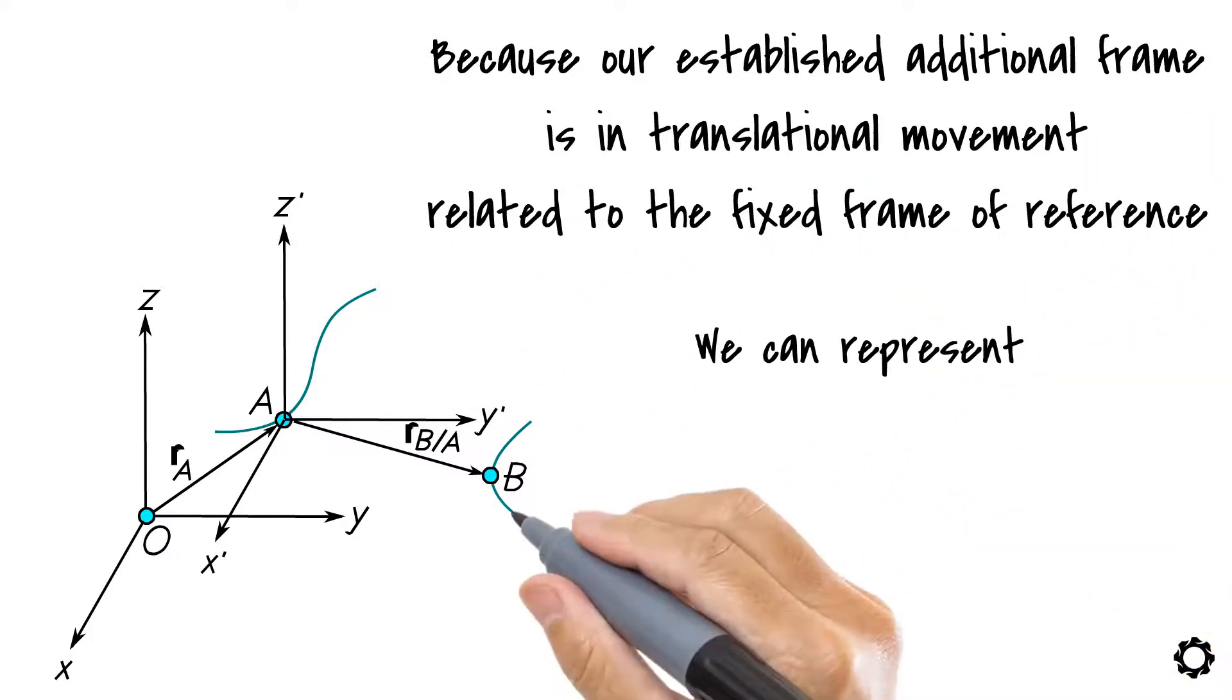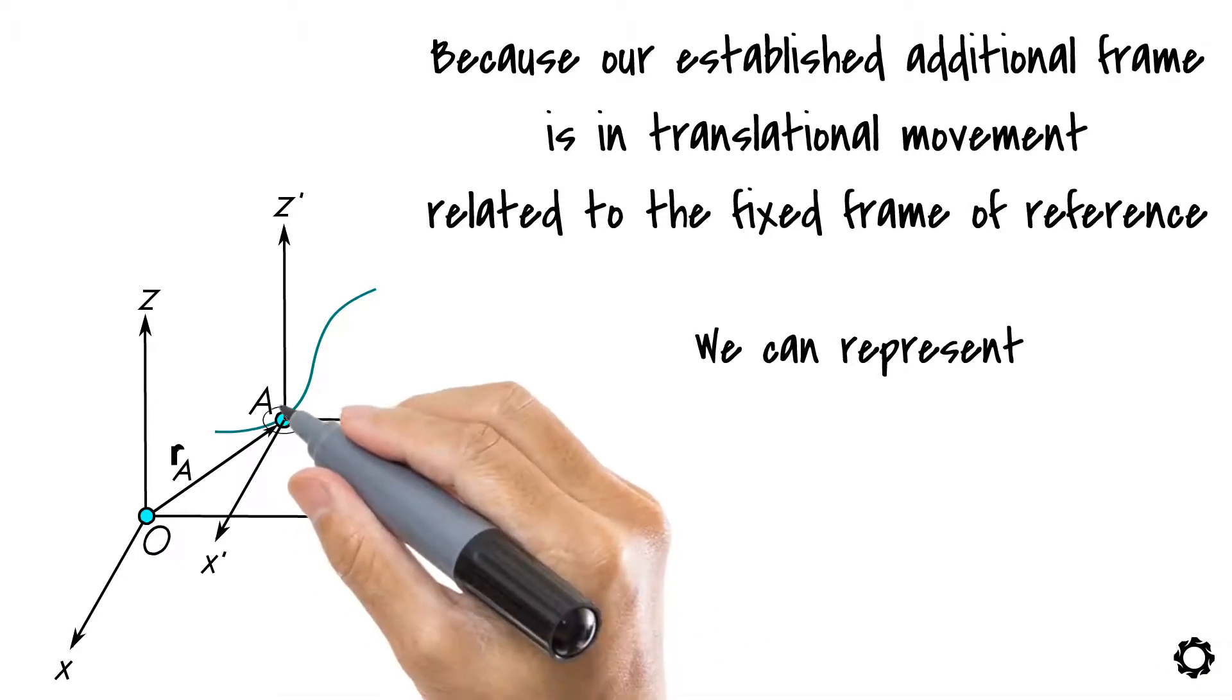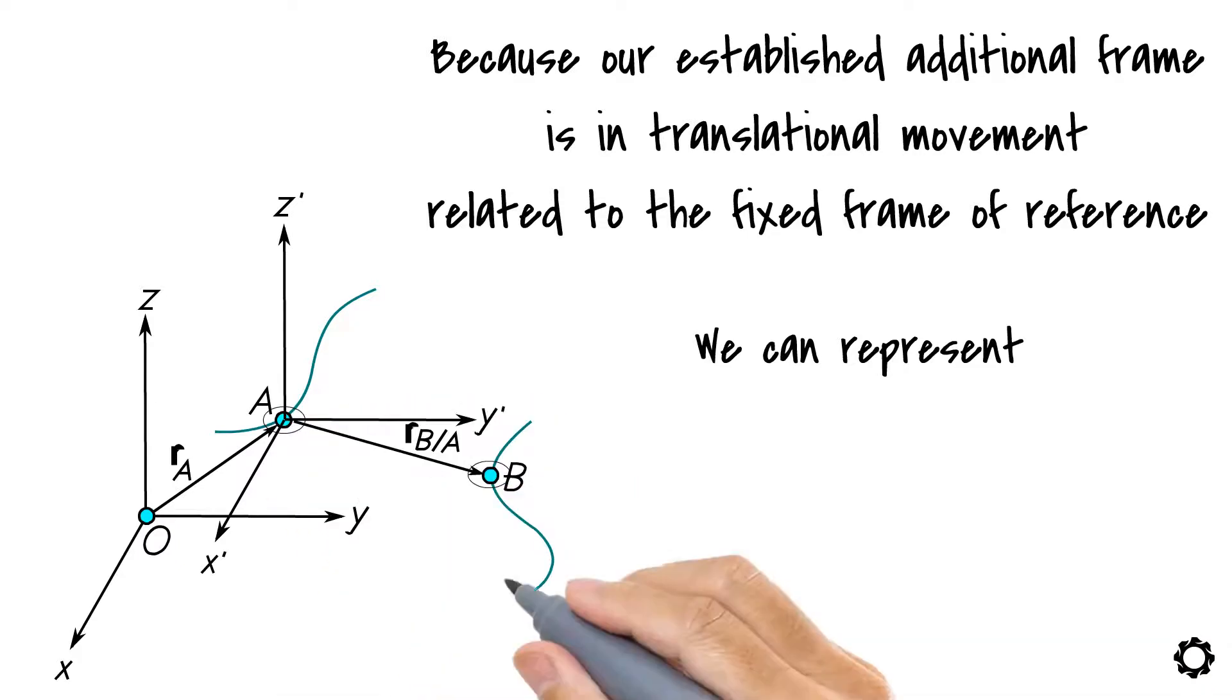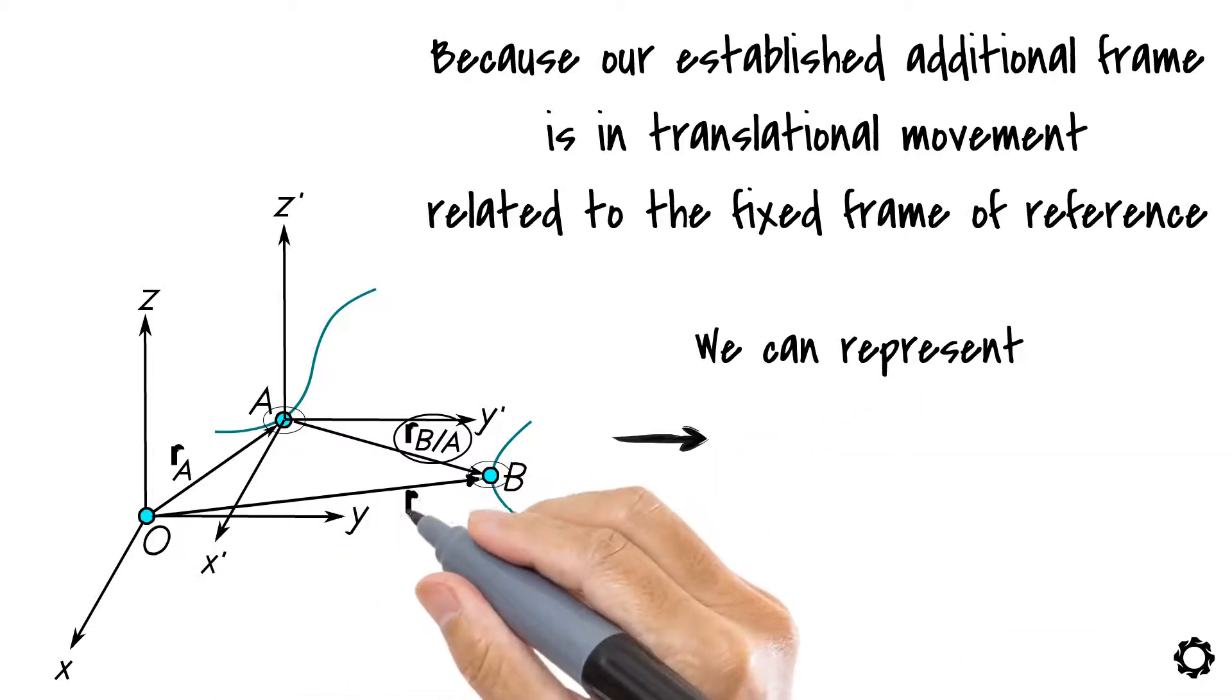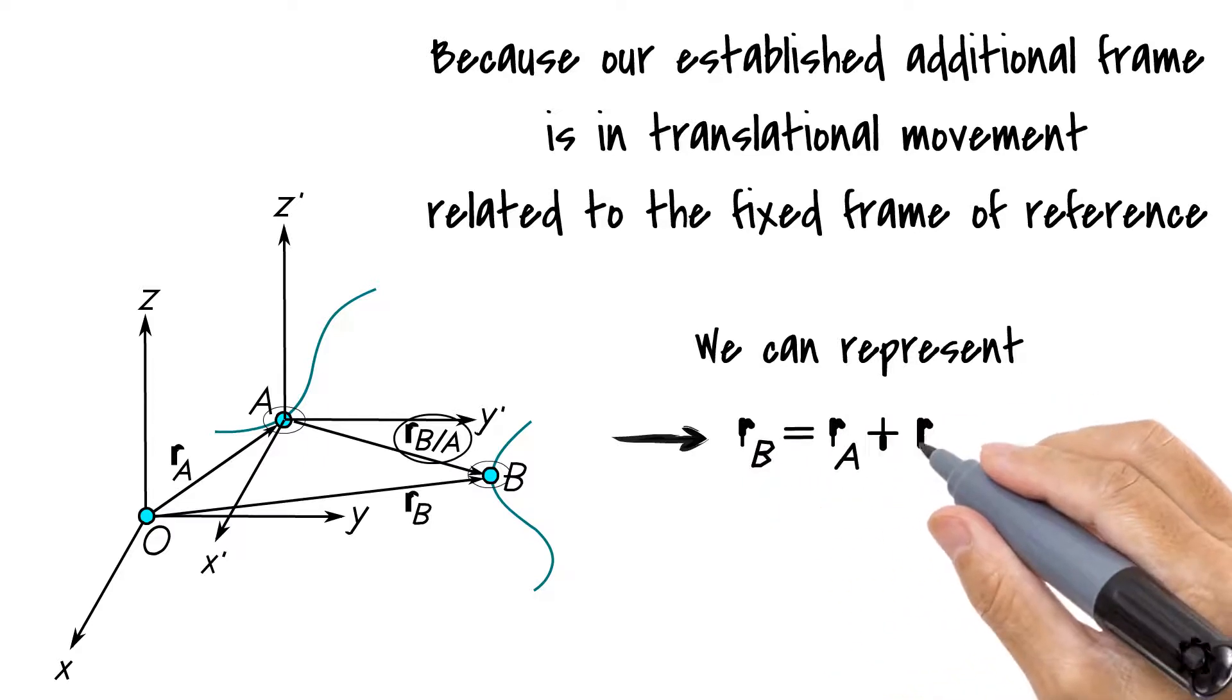we can represent the position of particle B related to particle A with the relative position vector RB/A. We can write the equation for the position of particle B as follows: RB equals RA plus RB/A.